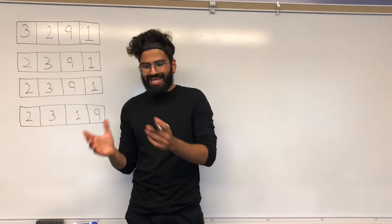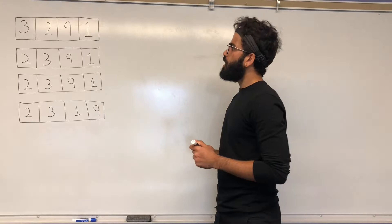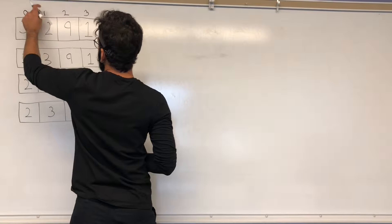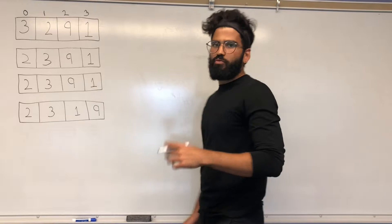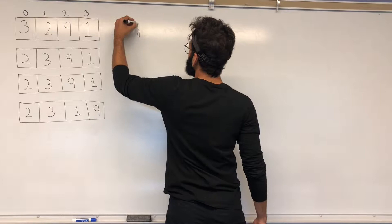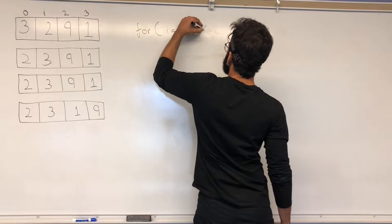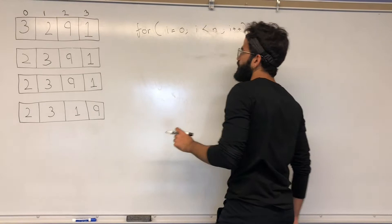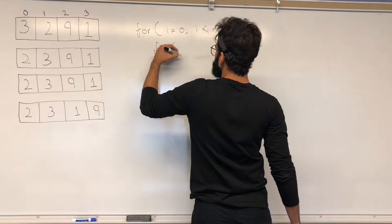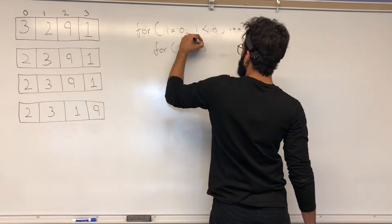We're going to sort this list in descending order. The list is indexed starting from zero, one, two, three. We know we have to go through the list multiple times, so we need nested loops. The outer loop goes from i equals zero while i is less than n, i plus plus. A single loop is not enough, so there's an inner loop j that also goes through to n. We'll make this more efficient later.